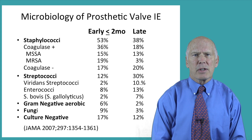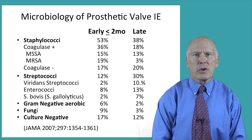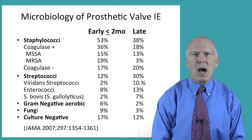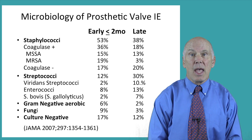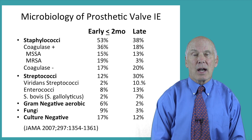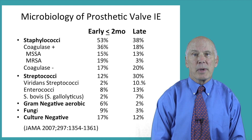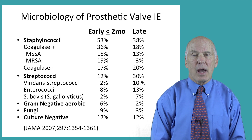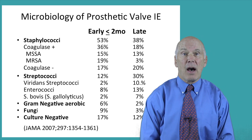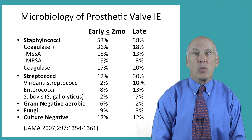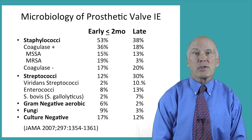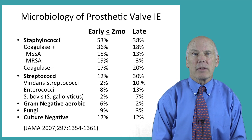The microbiology depends on when the infection develops relative to surgical valve replacement. Early infections, less than two months after surgery, are thought to arise from contamination at the time of surgery and are predominantly caused by staphylococci, enterococci, gram-negative bacilli, and fungi. Late valve endocarditis has a similar microbiology to native valve endocarditis, with a greater percentage of patients having coagulase-negative staphylococci.